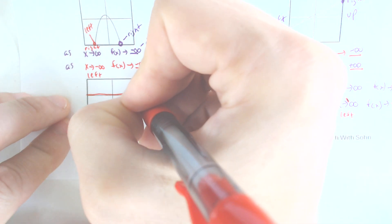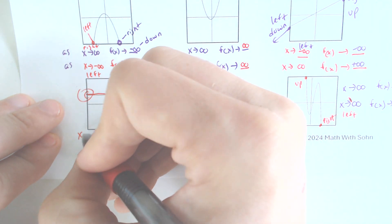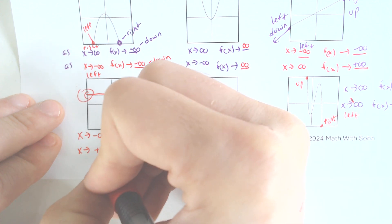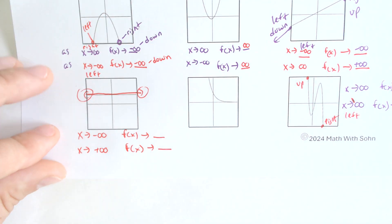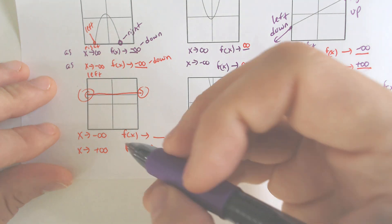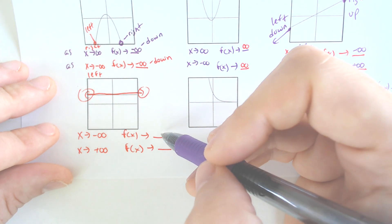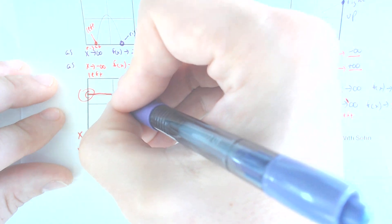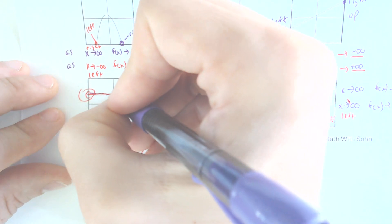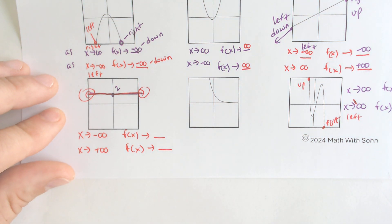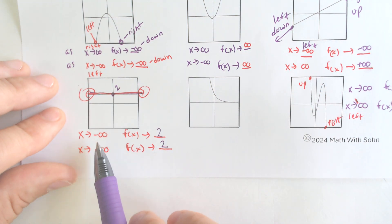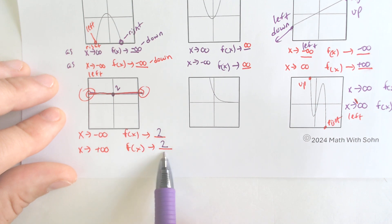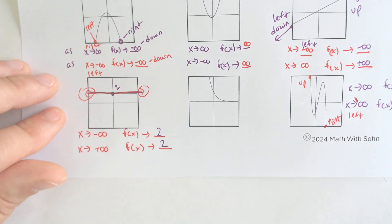Now here's a unique case — a flat line. A flat line still has a left and a right. As x approaches infinity and as x approaches negative infinity, f(x) is approaching a constant number. Let's say the y-intercept is 2 — the graph never goes up or down. So on both the left and right sides, the y values stay permanently at 2. This is a first introduction to an asymptote.